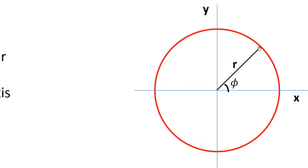This is a particle moving around in a circle. The radius of the circle is r, and the angle made by the particle with the x-axis is φ. If we start from here and make one complete revolution, it will come to 360 degrees — in other words, 2π.